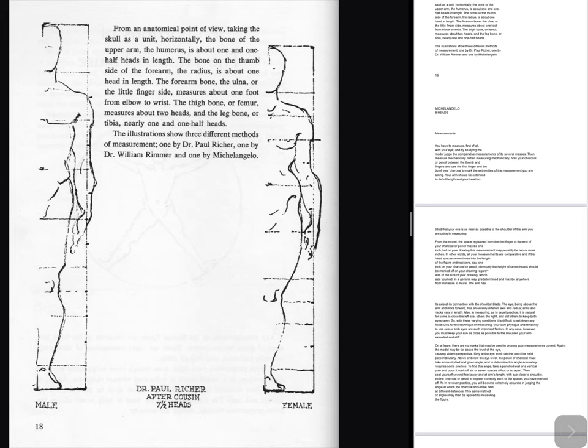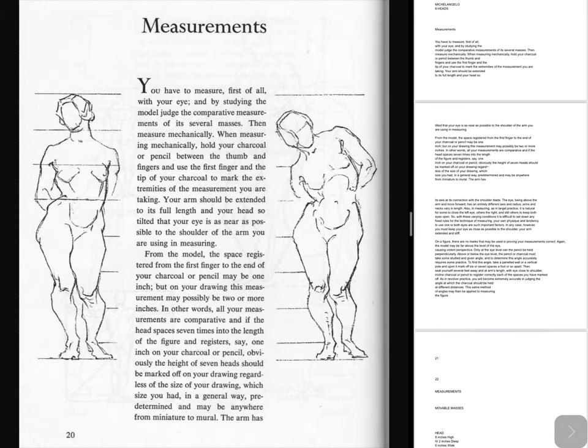Michelangelo: eight heads. Measurements — you have to measure, first of all, with your eye, and by studying the model judge the comparative measurements of its several masses. Then measure mechanically. When measuring mechanically, hold your charcoal or pencil between the thumb and fingers and use the first finger and the tip of your charcoal to mark the extremities of the measurement you are taking. Your arm should be extended to its full length and your head so tilted that your eye is as near as possible to the shoulder of the arm you are using in measuring. From the model, the space registered from the first finger to the end of your charcoal or pencil may be one inch, but on your drawing this measurement may possibly be two or more inches. All your measurements are comparative and if the head space is seven times into the length of the figure, the height of seven heads should be marked off on your drawing regardless of the size of your drawing.